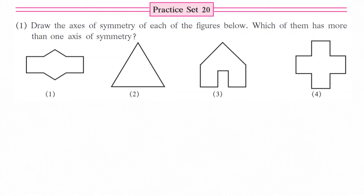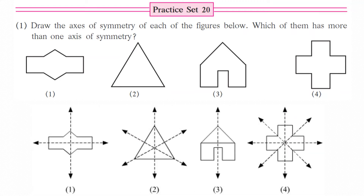Now let's begin with Practice Set 20, Question 1: Draw the axis of symmetry of each of the figures below. Which of them has more than one axis of symmetry? Axes of symmetry means the lines which we draw to divide them into equal parts. For the first figure, there are two axes of symmetry — one horizontal and one vertical line passing from the center — which divides the figure into equal same parts. For the second figure, a triangle, we have three axes of symmetry. For the fourth figure, we have four axes of symmetry. So, this is the first answer.